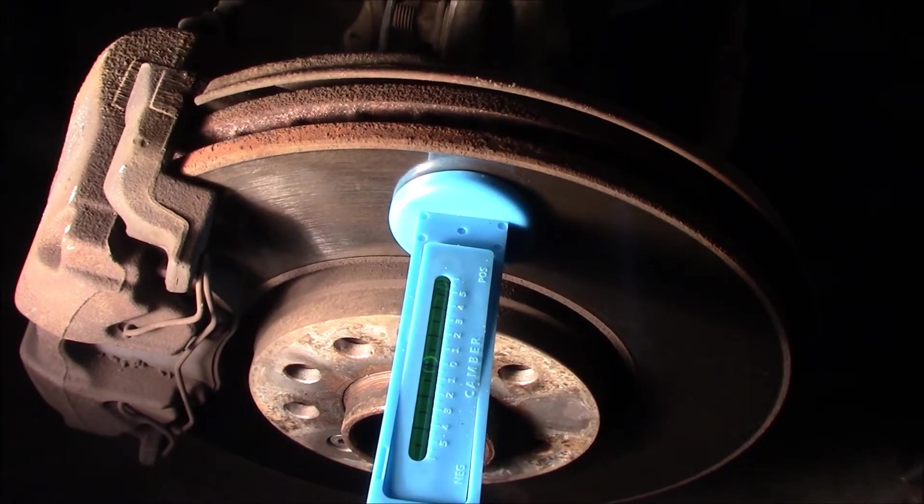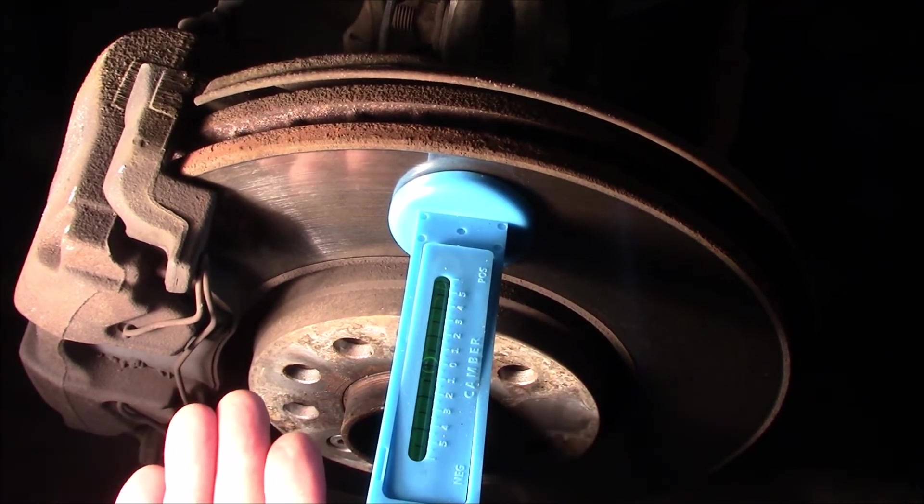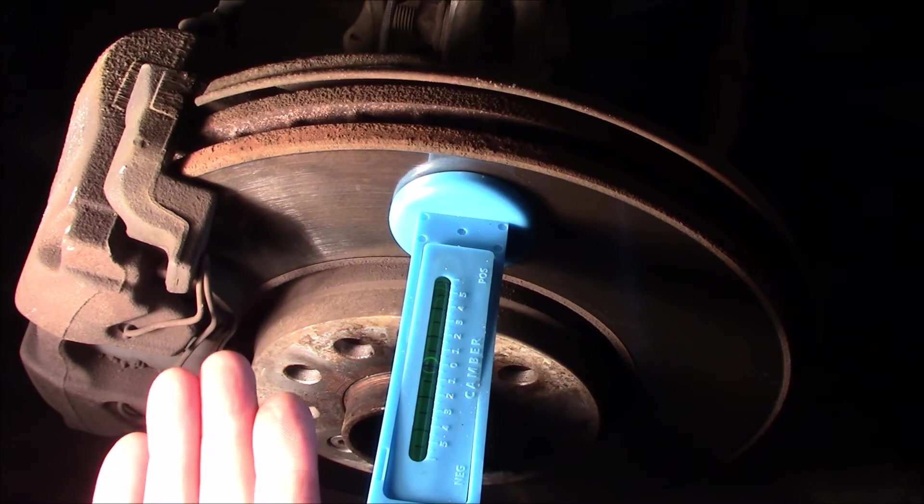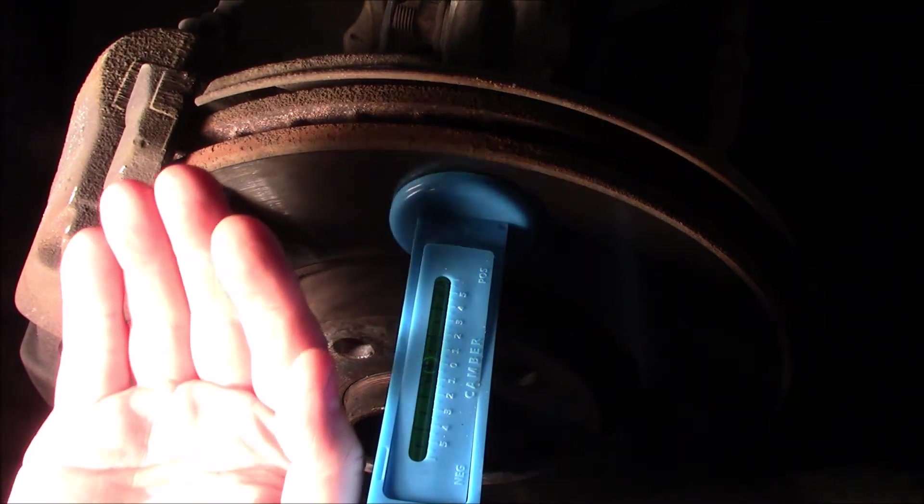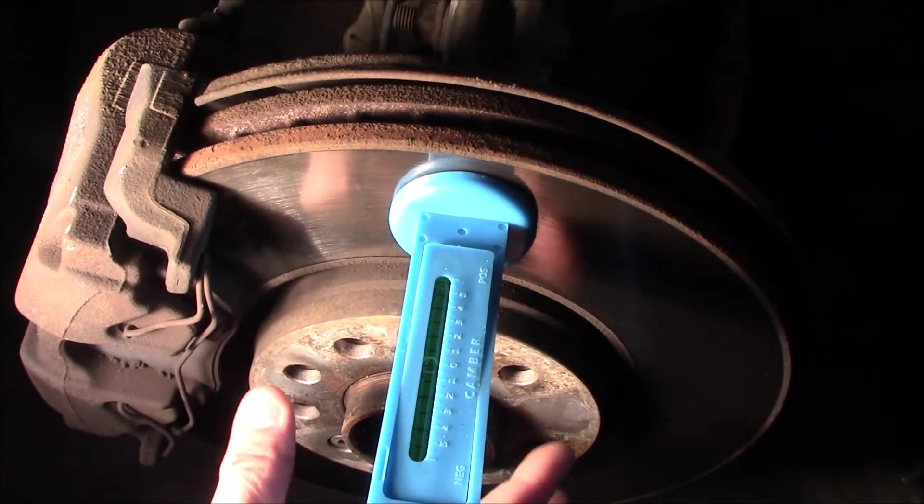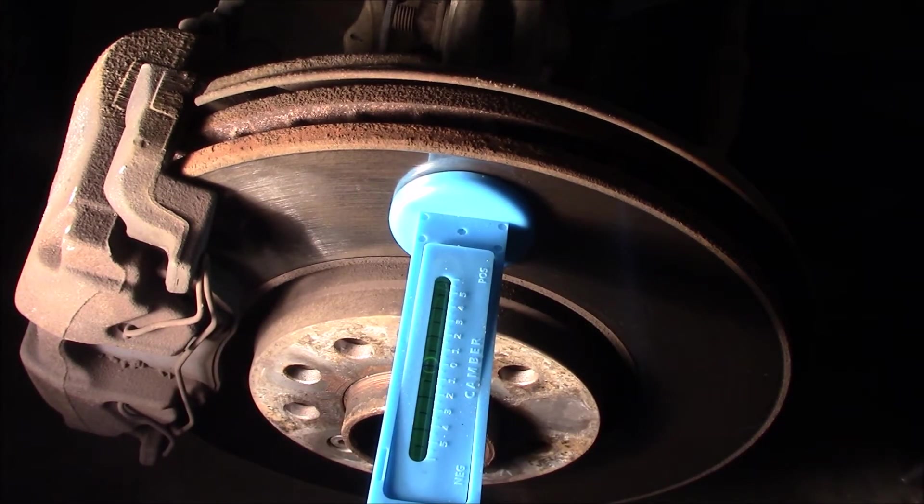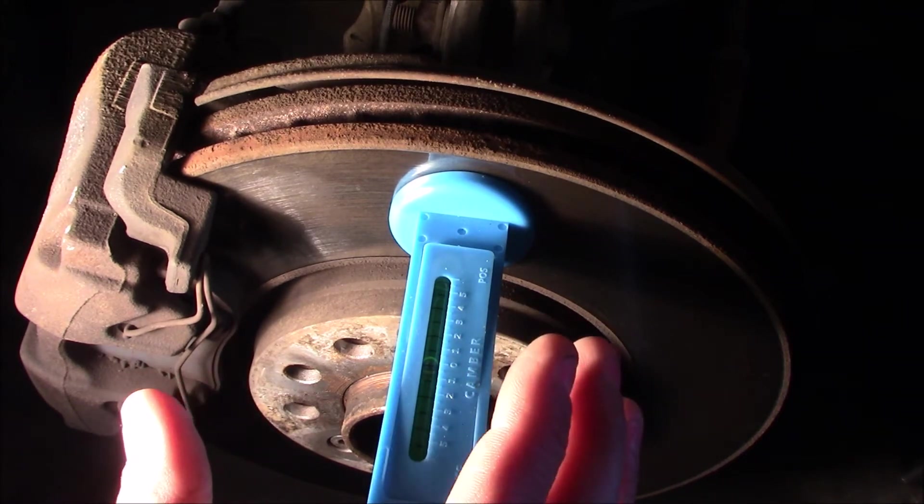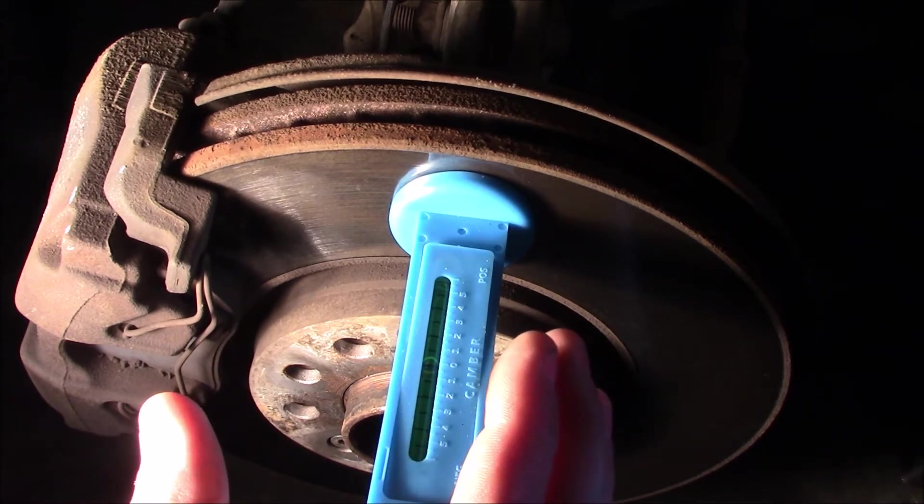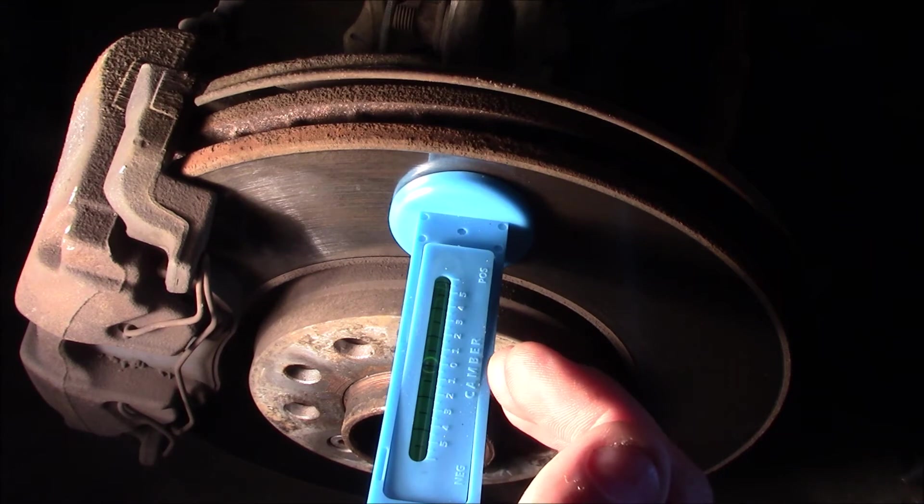Now that the car is jacked up and supported by jack stands, the problem we have is this angle changed since we jacked the car up. On the bottom of these little tools here, there's an adjustment knob and I zeroed it out. So I know that I need to go at least one and a half degrees positive camber.